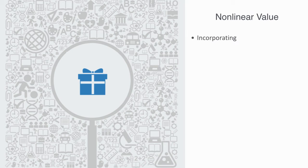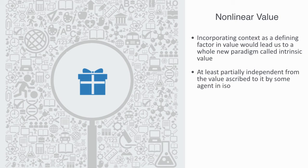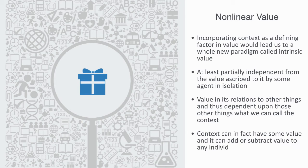This phenomenon — that value is not just dependent upon the properties of something in isolation, but also upon its context — is everywhere and very intuitive to us. But incorporating context as a defining factor into value leads us to a whole new paradigm called intrinsic value, where the value of something can be at least partially independent from the value ascribed to it by some agent in isolation. With intrinsic value theory, the change in value may derive from the item's relations to other things — what we call the context — and this context can in fact add or subtract value.